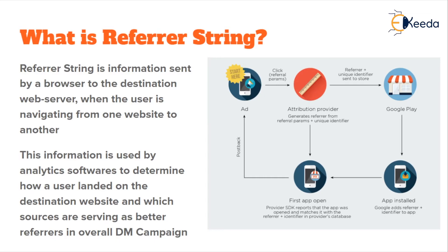These referral parameters are relayed by the algorithm to the destination server, indicating the ad has been successful — somebody has clicked on it, so there is a CTR. As you proceed on that journey by clicking the ad, the referrer plus a unique identifier is sent to the Google Play Store. Let's say the ad was for another app or a game, taking you to the Google Play Store to download it. As you land on Google Play, the link being added to your journey includes a referrer and a unique identifier. Once you install the app, that information is also added to the final link, and it becomes a whole string — called the referrer string — which is finally relayed to the destination app. When you first open the app, the destination app is now aware of how you got there.